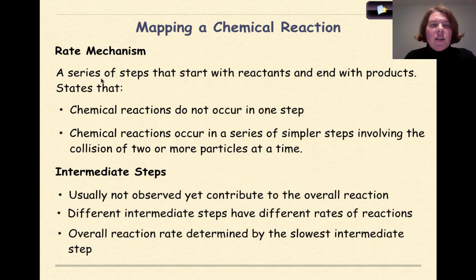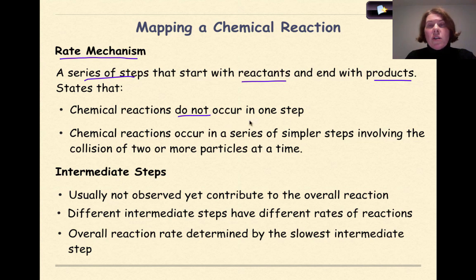Mapping a chemical reaction. Rate mechanism is a series of steps that starts with reactants and ends with the products. States that chemical reactions do not occur in one single step. Chemical reactions occur in a series of simpler steps involving the collision of two or more particles at a time.